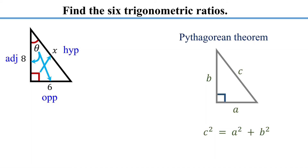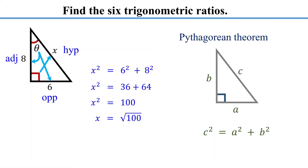For our right triangle, x squared equals 6 squared plus 8 squared, that is 36 plus 64, which equals 100. Taking the square root of both sides, x equals the square root of 100. Since we are dealing with lengths, we only consider the positive value, as length cannot be negative. Therefore, the length of the hypotenuse is 10.